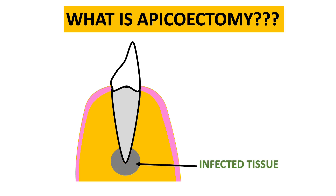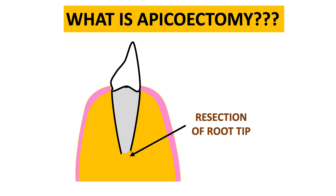Look at the figure to understand apicectomy: we have an infected or periapical tissue, and we will remove that tissue along with the root tip — so resection of the root tip is also done. According to the definition: surgical resection of the root tip along with the removal of pathological periapical tissue. We perform apicectomy in cases where standard RCT is not enough to save the tooth.